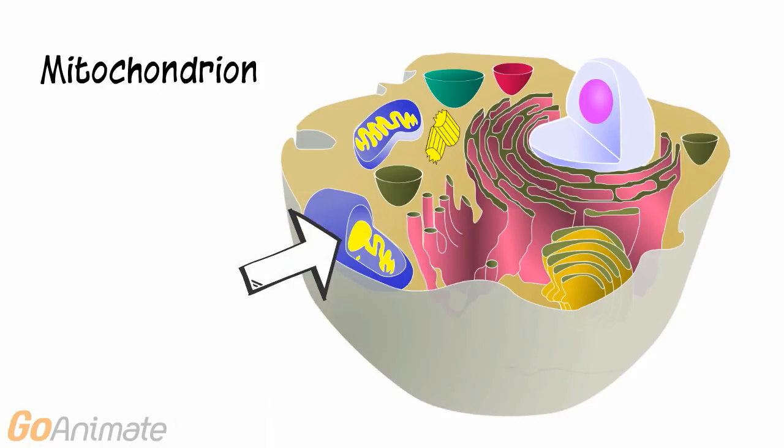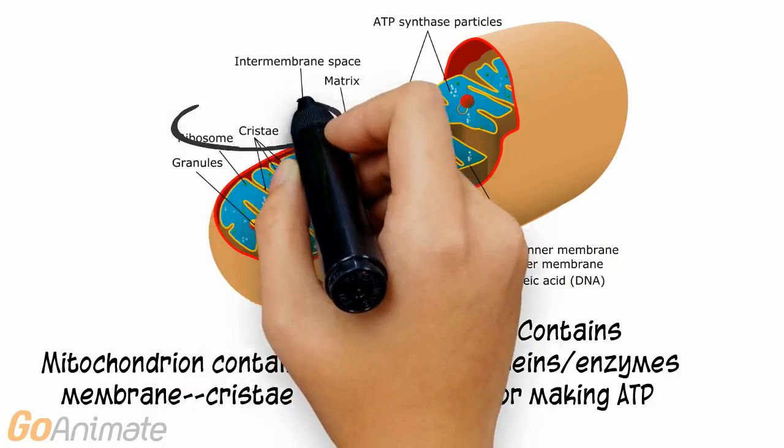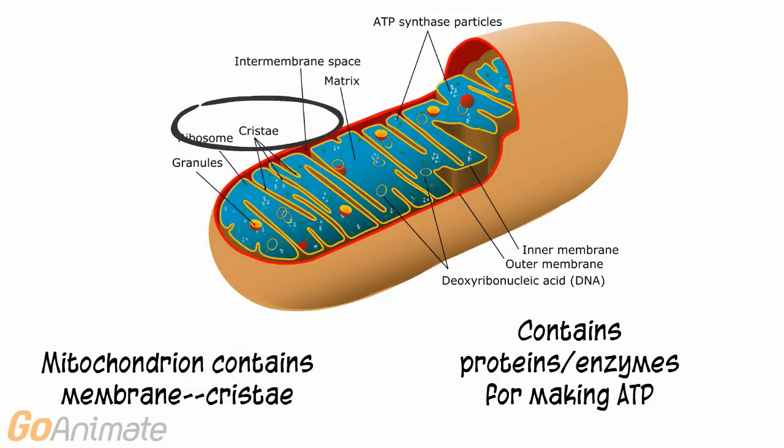The mitochondrion is an important energy-producing organelle. The mitochondrion contains an inner membrane called the cristae, which contains proteins and enzymes for making ATP, or adenosine triphosphate.